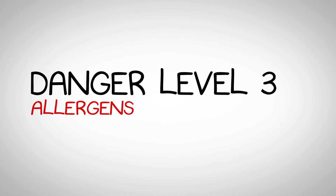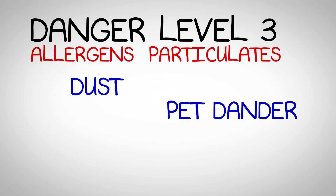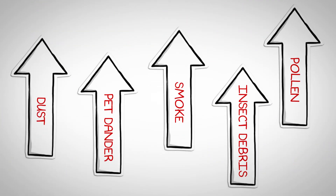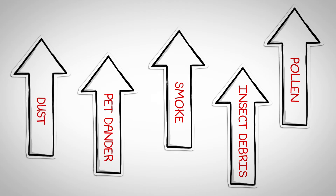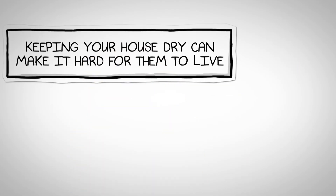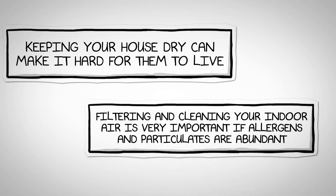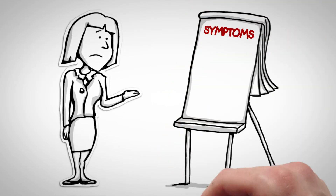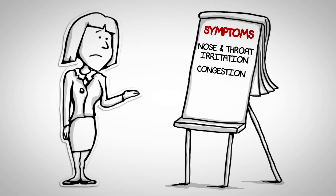Danger level 3 are allergens and particulates. Dust, pet dander, pollen, insect debris, and smoke are microscopic organisms that may live and float around naturally in your home. They typically travel through your air ducts and upward through the home following the stack effect. Keeping your house dry can make it hard for dust mites to live. Filtering and cleaning your indoor air is very important if these allergens and particulates are present in abundance. Symptoms could be nose and throat irritation, congestion, sneezing, coughing, and asthma flare-ups.